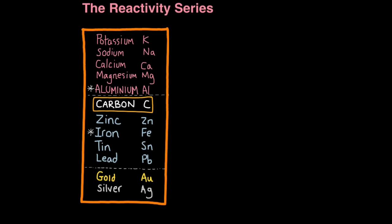So now let's look at the reactivity series and understand why it's important in terms of extracting metals. So the reactivity series is basically just a list of metals, and carbon, a non-metal, in order of their reactivity. With potassium at the top being the most reactive, going down to the least reactive, gold and silver, at the bottom.